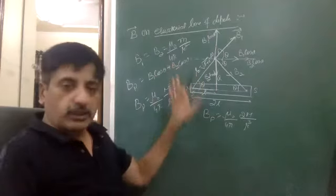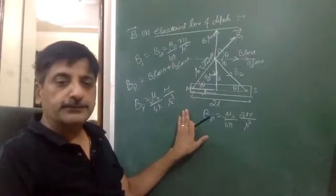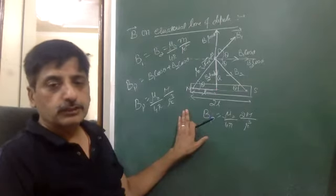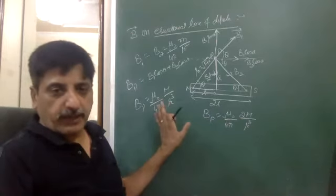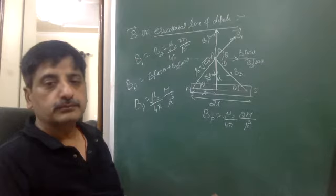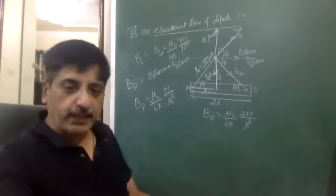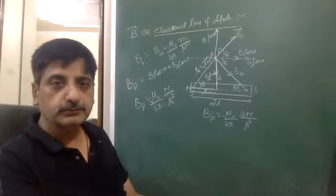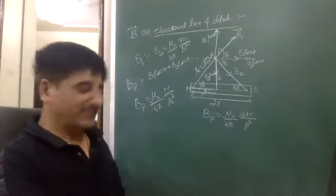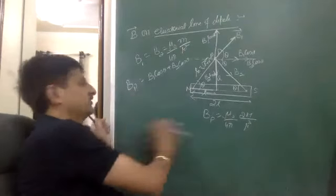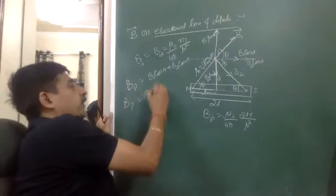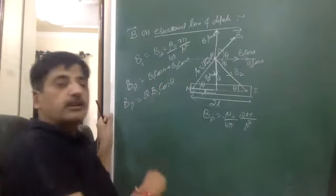I will do the derivation. In this derivation, you will need to take 2 B1 cos theta. You will need to take 2 B1 cos theta because B1 and B2 are equal.